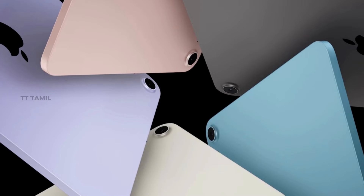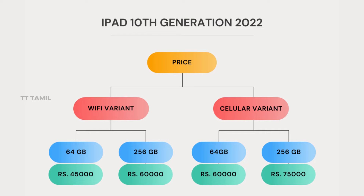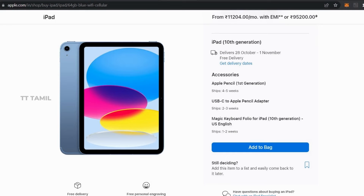For the iPad 2022, there are two categories: Wi-Fi Variant and Cellular Variant. The Wi-Fi 64GB is ₹45,000 and 256GB is ₹60,000. The Cellular 64GB is ₹60,000 and 256GB is ₹75,000. This model will be available for pre-order, and the 256GB is officially launched.